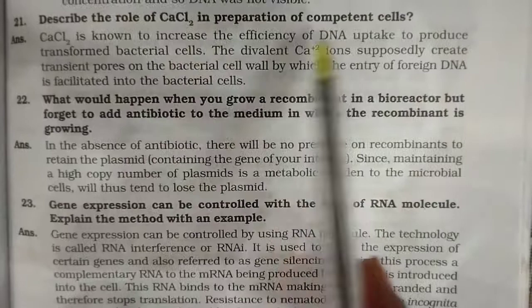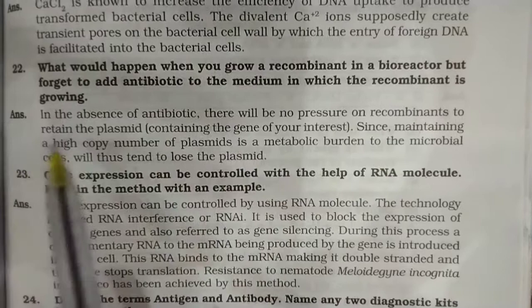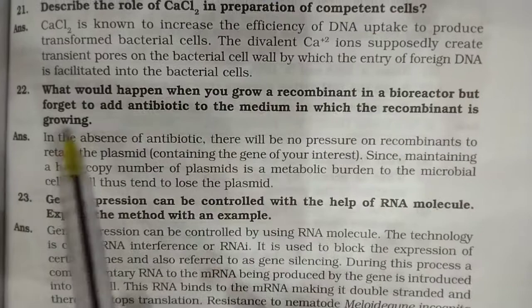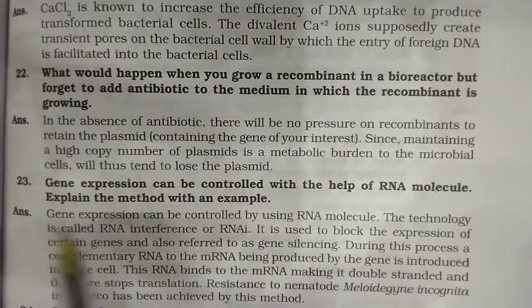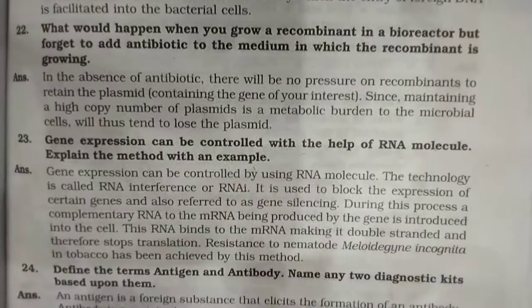The answer has three points — children, you have to study; there is no shortcut. Question twenty: Describe the role of calcium chloride in the preparation of competent cells to increase the efficiency of DNA uptake. Question twenty-one: What would happen when you grow a recombinant in a bioreactor but forget to add antibiotic to the medium? Question twenty-two: Gene expression can be controlled with the help of RNA molecules — explain the method with an example.